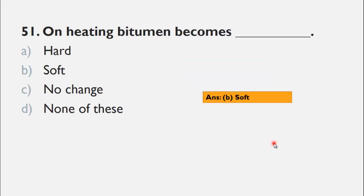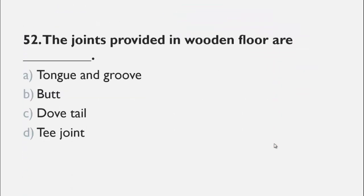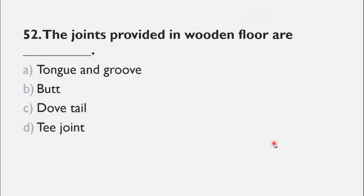MCQ number 52 is: The joint employed in wooden floor are ___. The choices are A) tongue and groove, B) butt joint, C) dovetail joint, and D) T joint. The most commonly used joint in wooden floor is A, tongue and groove joint.